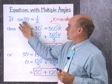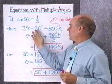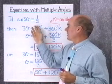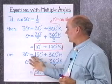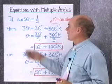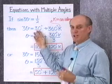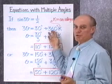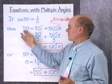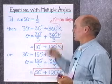Suppose we want to solve sine 3 theta equals 1 half. Then 3 theta would be equal to 30 degrees — that's the solution in quadrant 1 — or 3 theta would be equal to 150 degrees, the solution in quadrant 2. For all solutions: 3 theta equals 30 degrees plus 360 degrees times k, where k is an integer.